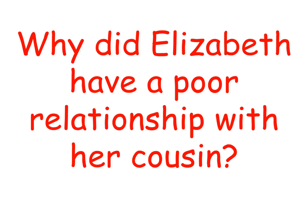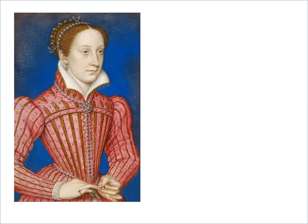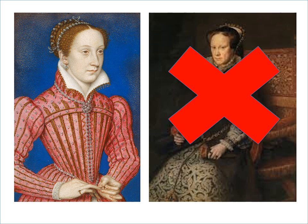Today we are looking at Elizabeth again — specifically why she had a poor relationship with her cousin. The year is 1568. Elizabeth has been on the throne for 10 years, but she has no husband and no children. For Elizabeth, this is a bad thing because there is a threat from the north: her cousin Mary Queen of Scots, who is Catholic and is a potential danger of overthrowing Elizabeth from the throne. Don't get confused — Mary Queen of Scots and Mary Tudor are two different people.